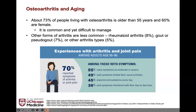I like to start by grounding us in my philosophy: just because something is common does not mean it is normal. Oftentimes in clinic, a patient will say they don't bring up their pain because it's 'normal for age.' But just because it is common does not mean it is normal. Osteoarthritis is not a normal knee — it's not a normal hip. We're not going to call it that. It's common in older adults, but certainly not normal.